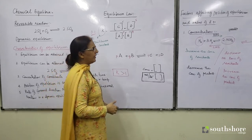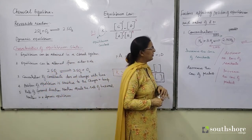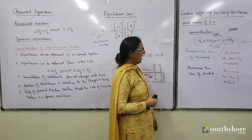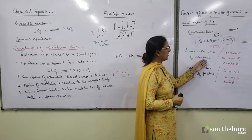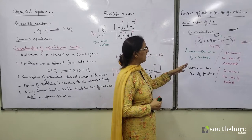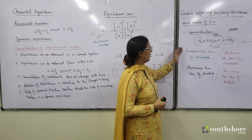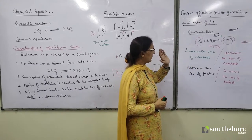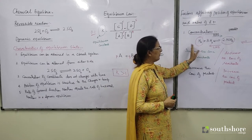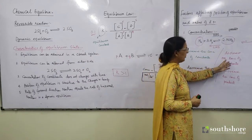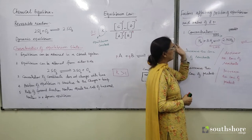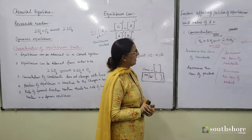You need to remember: whenever concentration is being changed, it affects position of equilibrium. If you are increasing concentration of reactant or decreasing concentration of product, this will shift position of equilibrium towards the right-hand side. If you are decreasing concentration of reactant or increasing concentration of product, it will shift position of equilibrium towards the left-hand side.